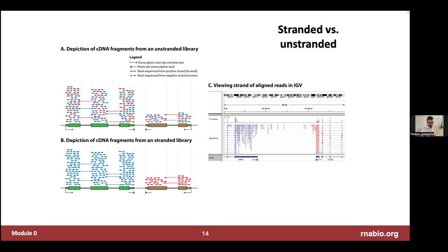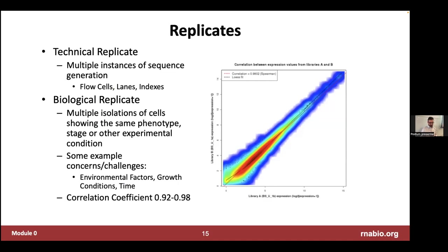This is a visual depiction of strand information. When you align your reads — where red and blue indicate the strand — sometimes there's just a random mix and you can't tell which strand the RNA was transcribed from. At the bottom is an example where strand information is encoded in the data, and we're going to show an example in IGV of what this looks like during the hands-on part.